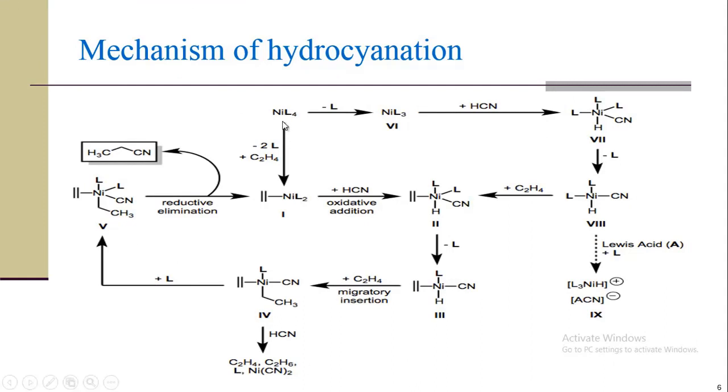This is our ligand NiL4. L is the ligands which are attached with the central metal atom. It will follow two mechanisms. First, two ligands are removed and we add alkyne. It will add NiL2 with alkyne. Then after oxidative addition of hydrogen cyanide, HCN will be added on ligand to form one cyanide and the other hydrogen.